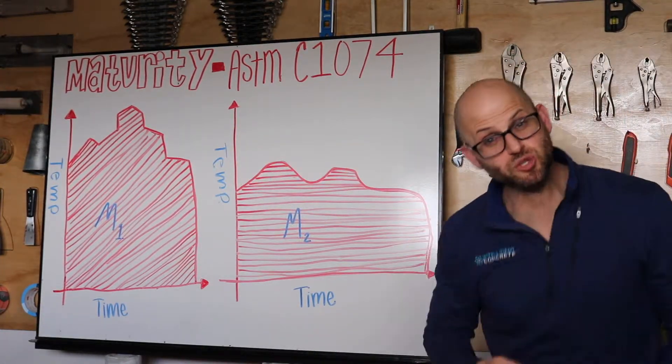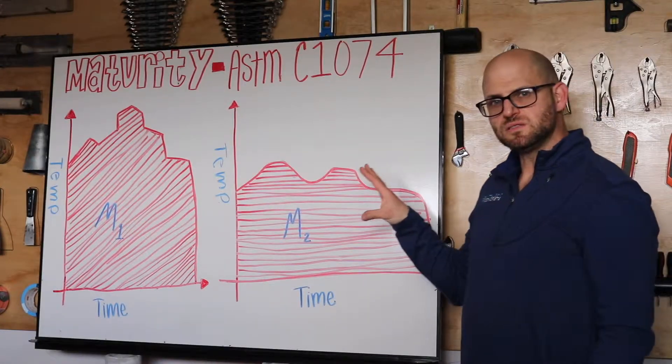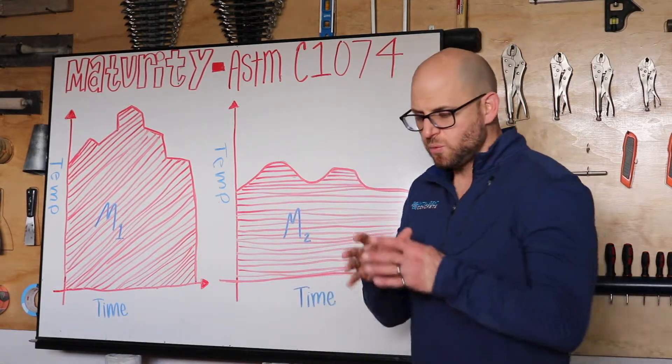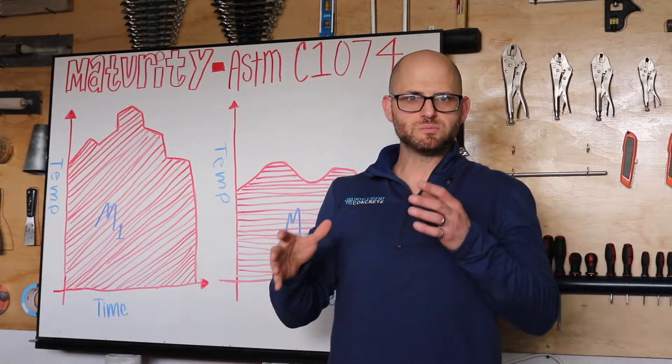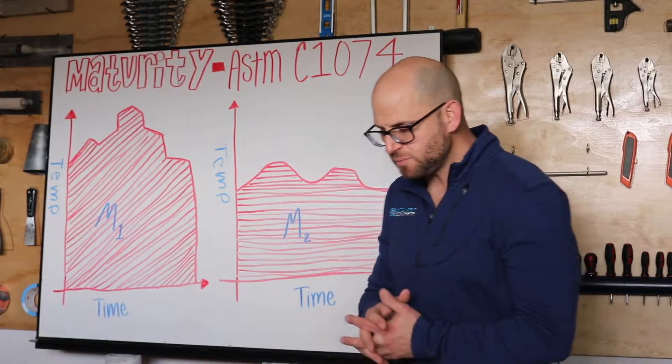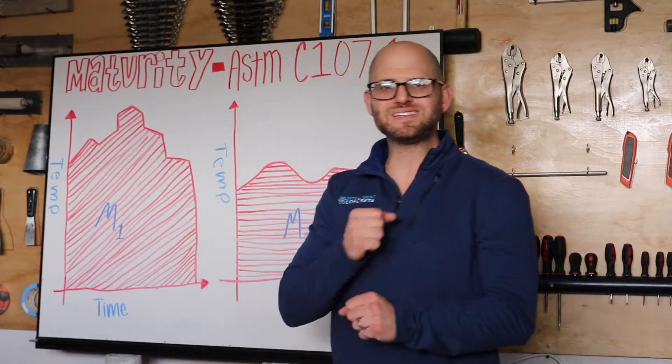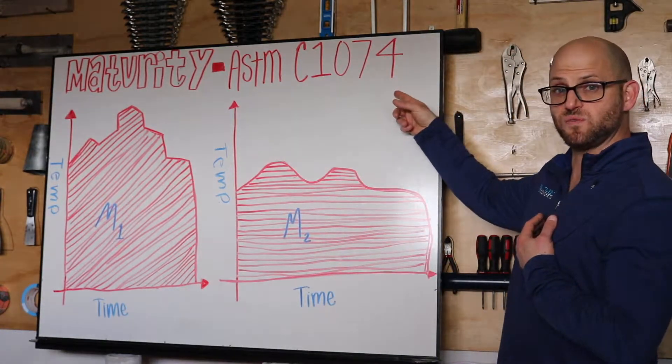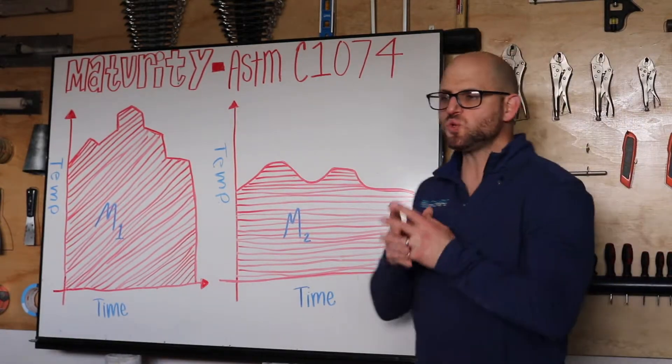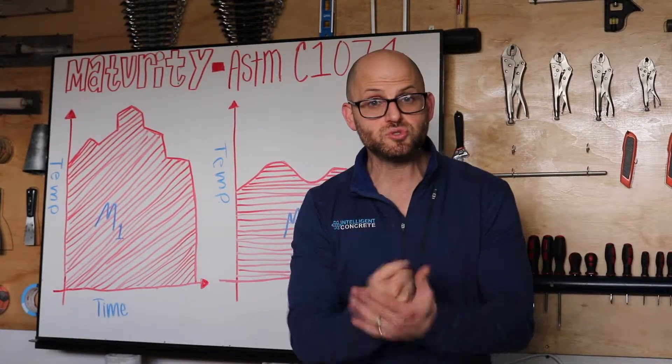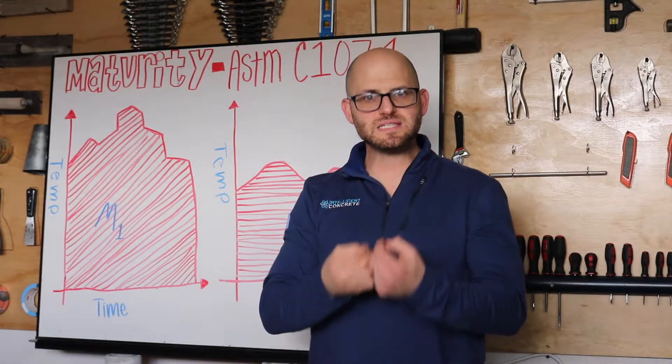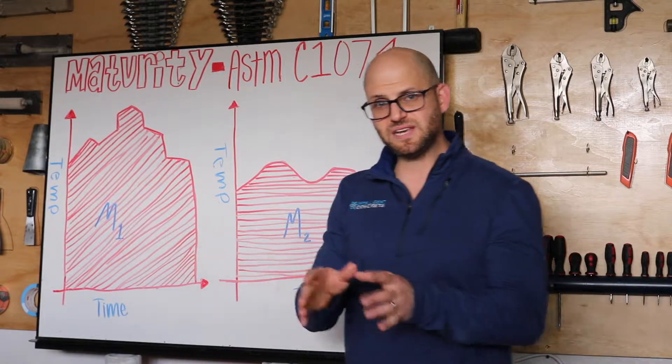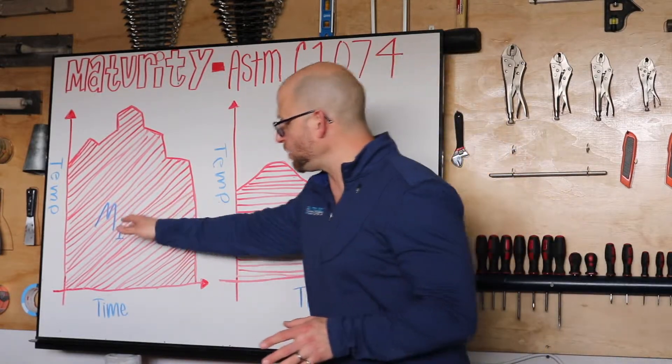This all gets back to the strength of the concrete, and that's why it's important when you develop your original maturity curves or your reference curves on the mix that you'll be using in the field. You want to do it in a standard environment, at least in my opinion as well as ASTM C1074. The reason is you want to identify what your concrete is supposed to do in a standardized environment, not the environment in the field, but a perfect world standardized environment.